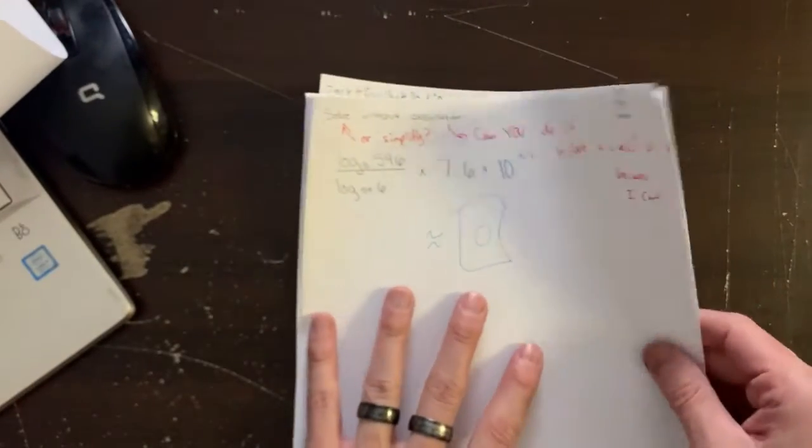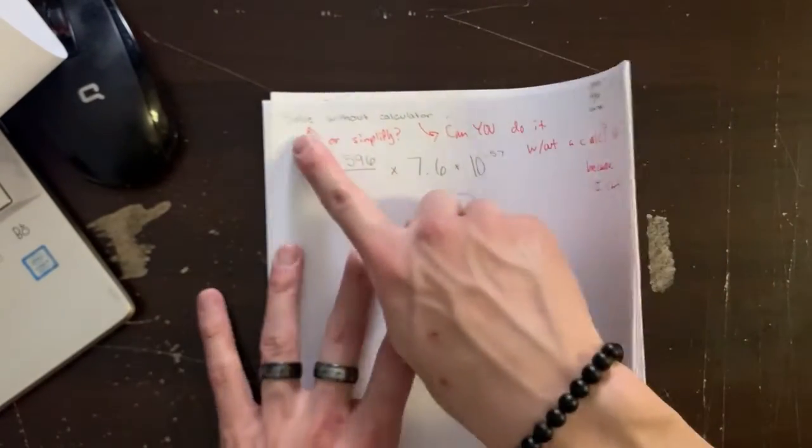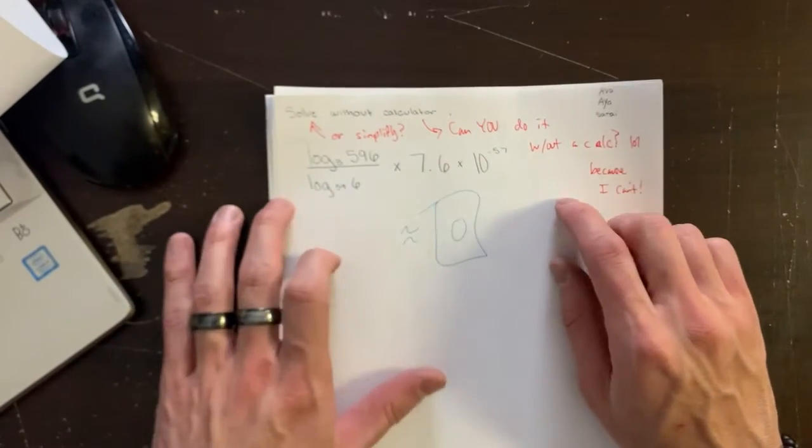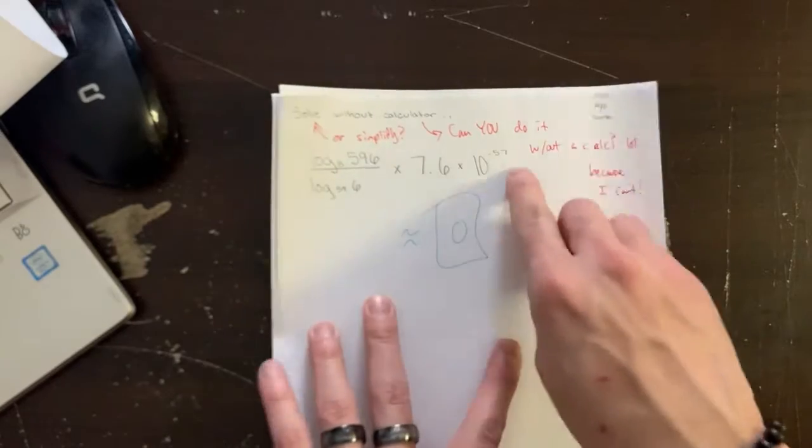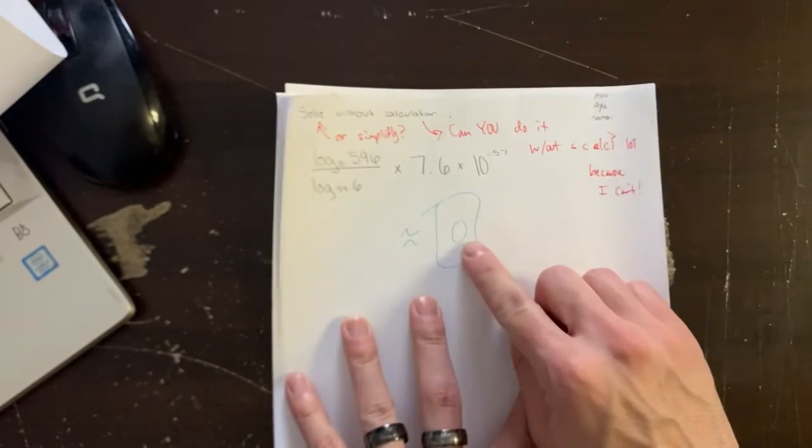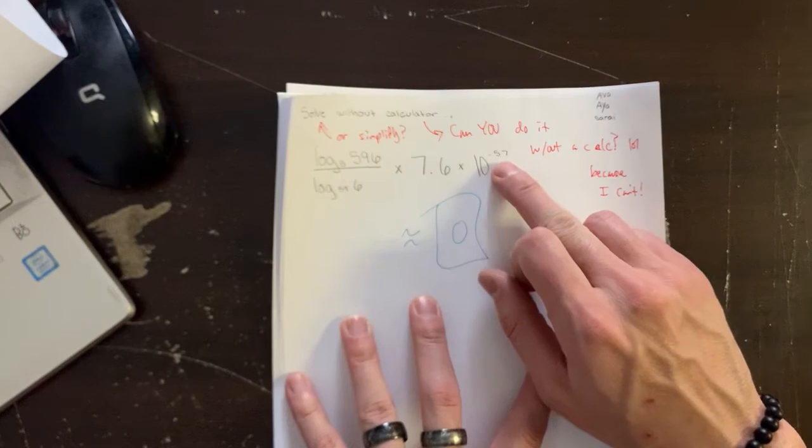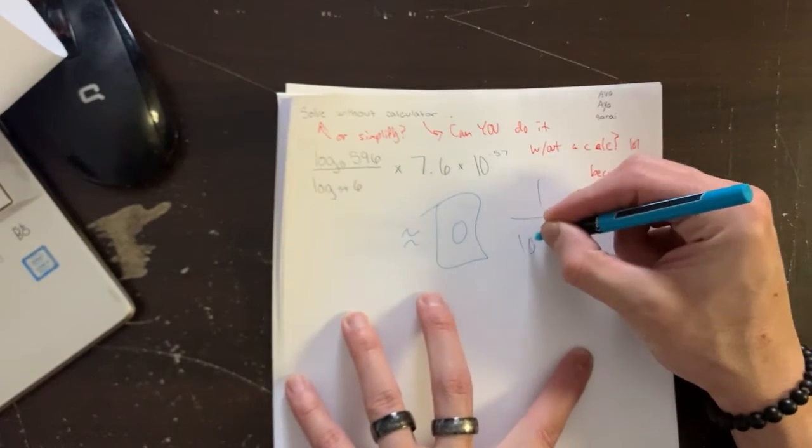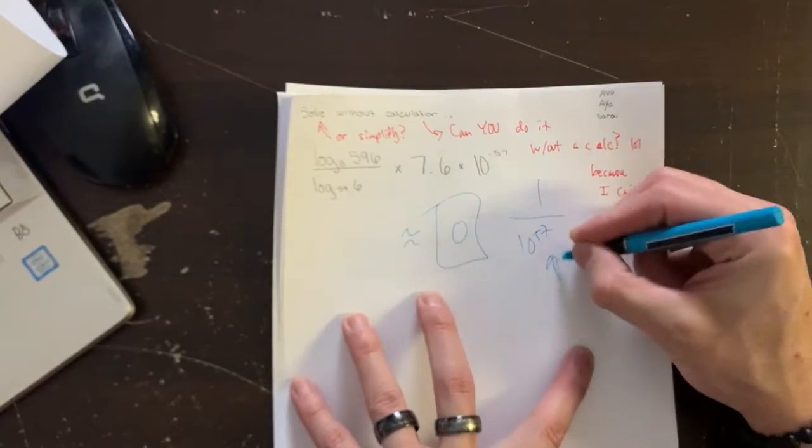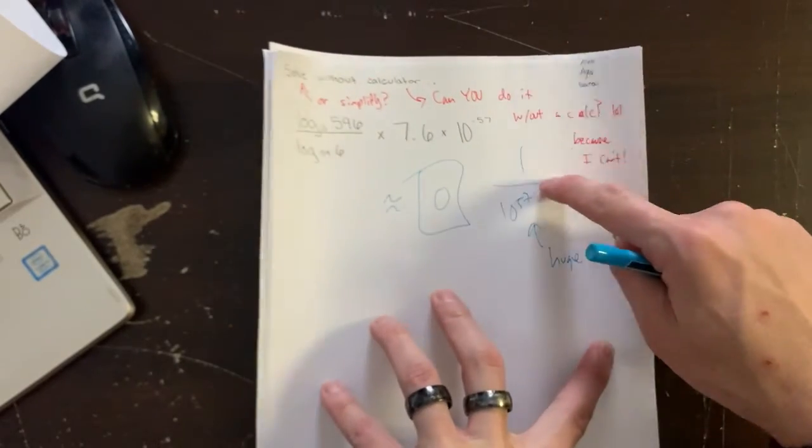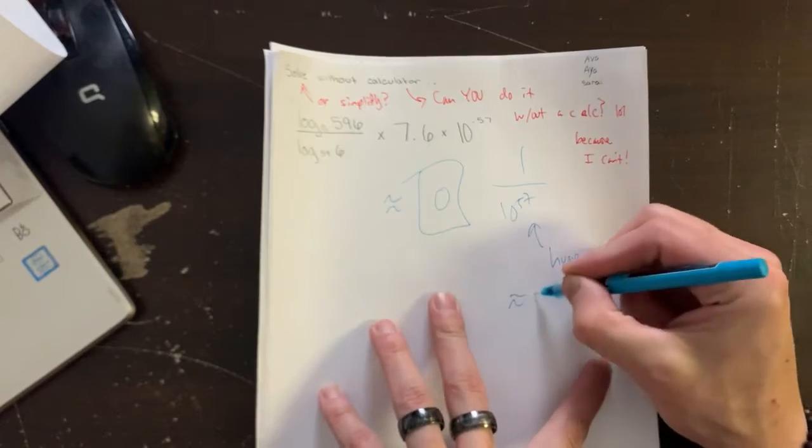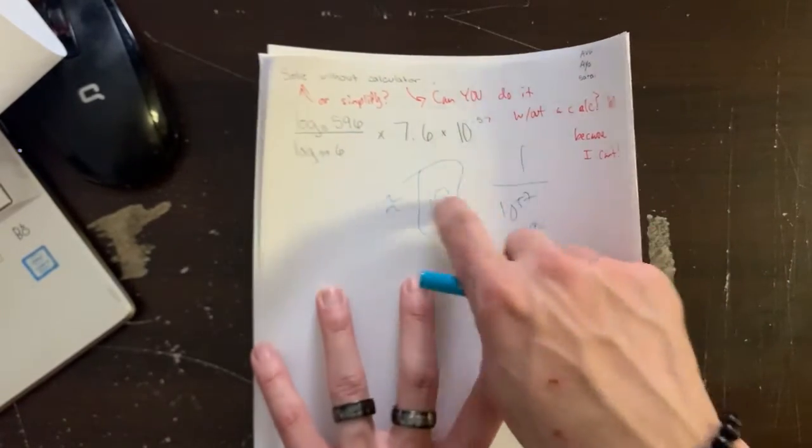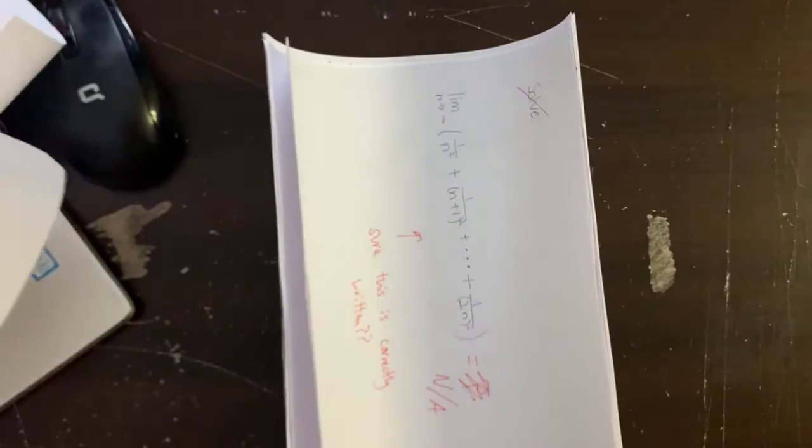And then let's see here. So the goal here was to do this without a calculator. It said solve, but I'm assuming it said simplify because there's no equation, right? There's no equal sign. So here, look, I'm going to say this is about zero because of this guy here. You see, 10 to the power of negative 57, that's the same as one over 10 to the power of 57. This number is huge. One divided by a huge number is basically zero, and zero times all this stuff here is basically zero. Cool problem.